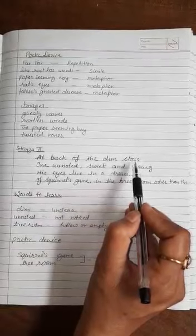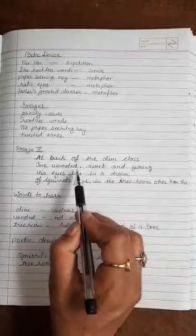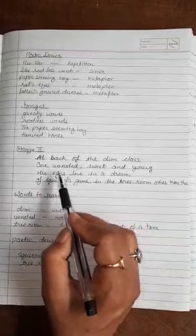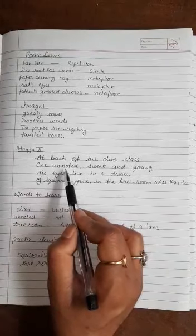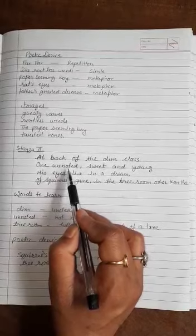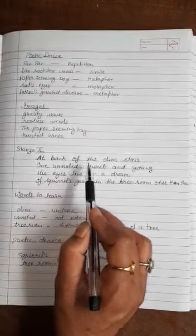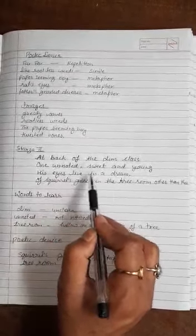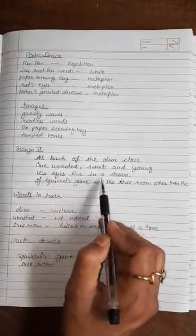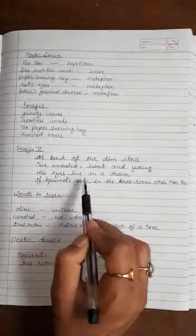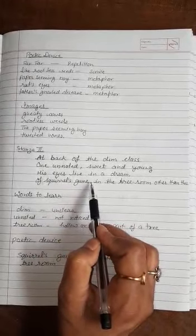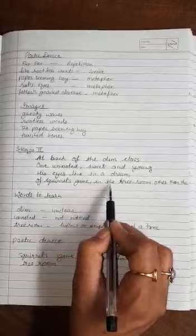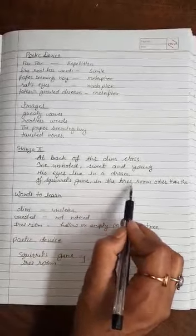Dim class, this image shows that there is no proper arrangement of lightning in the classroom. The classroom is looking very dull. One unnoted, unnoted means unnoticed. He is not noticed by anyone because he is sitting at the back side of the classroom. His eyes live in a dream. The boy was dreaming of squirrel games or the games like this.